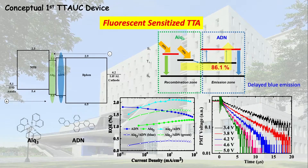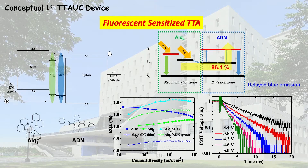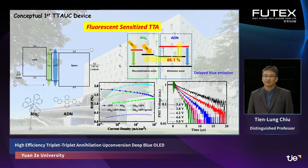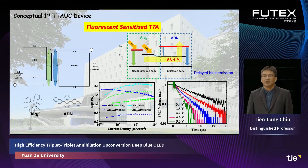We then fabricated our concept first-generation TTA-UC device. We use ALQ3 and ADN emitting layers. The carriers recombine in the first ALQ3 layer, and then the triplet energy transfers to ADN. The TTA process in ADN produces delayed blue emission, which we can also observe in the time-resolved signal. However, we still see some green emission from ALQ3, which is not expected.